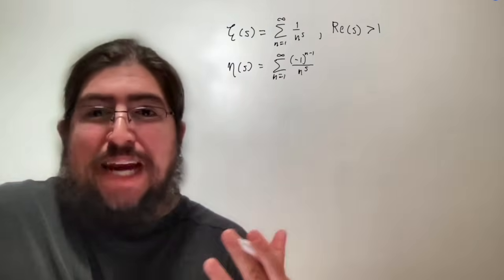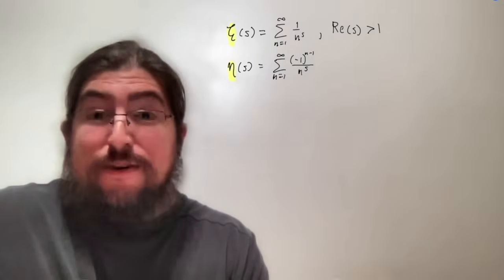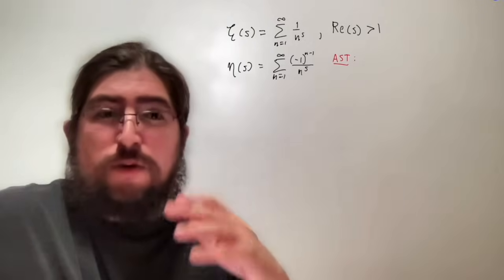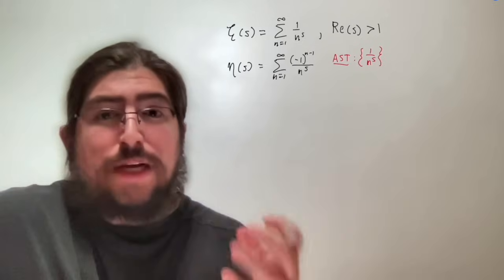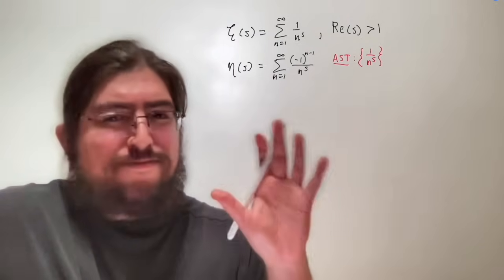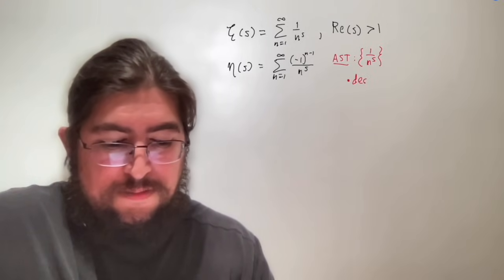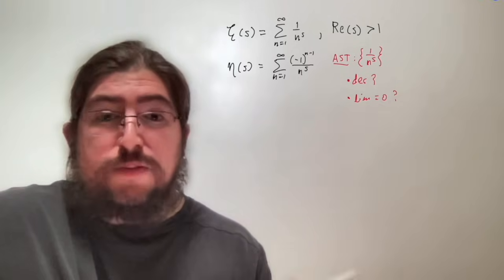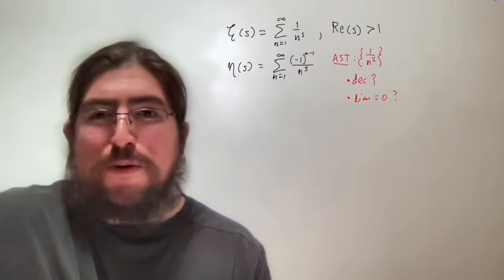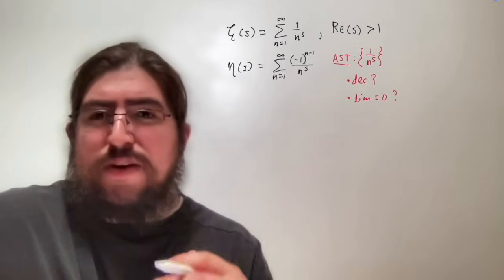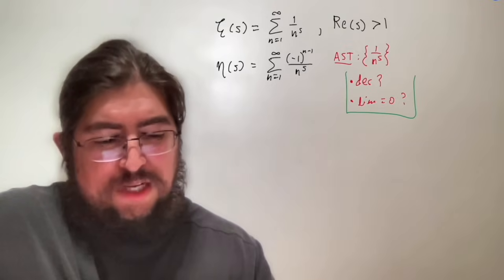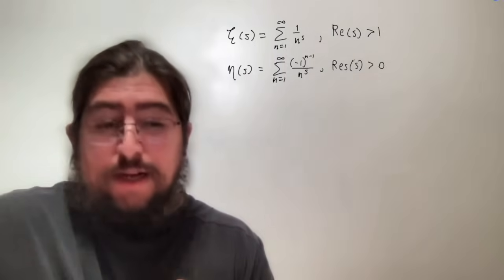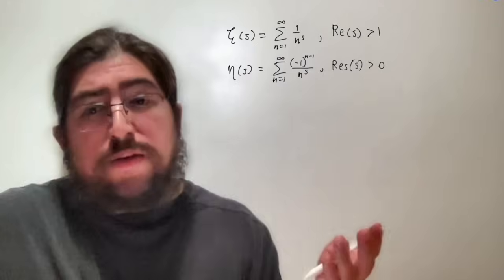The Dirichlet eta function uses the Greek letter eta. It's basically the alternating version of zeta's sum. By the alternating series test, we consider the sequence 1 over n to the s — is it decreasing, and does its limit equal zero? As it turns out, this is decreasing when the real part of s is greater than 0, and the limit equals 0 when the real part of s is also at least 0. So eta is valid when the real part of s is greater than 0, whereas zeta's original sum is only valid when Re(s) > 1.